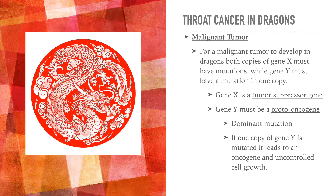For a malignant tumor to develop, both copies of gene X must have a mutation and gene Y must have a mutation in one copy. This means that gene X is a tumor suppressor gene, while gene Y is a proto-oncogene. If one copy of gene Y is mutated, it generates an oncogene, which then leads to uncontrolled cell growth, resulting in a malignant tumor.